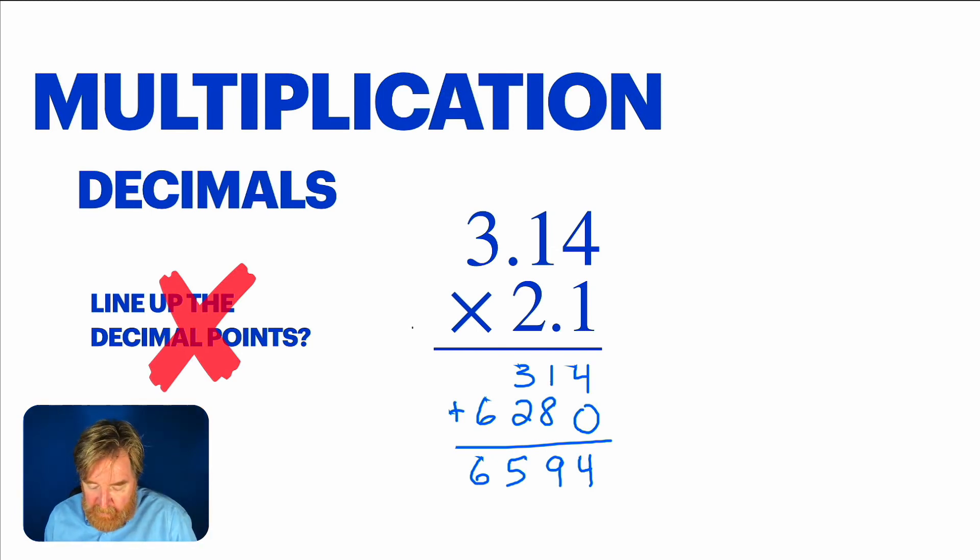Well, the way you do it is you count how many decimal places are in the two factors. So I count three. Two in the top factor and one in the bottom factor. So a total of three. So that means my answer also has to have three decimal places. So one, two, three. I'll put the decimal point right there. And if you look, that makes total sense, right?